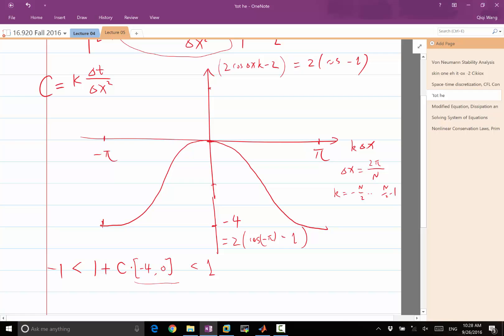Because when this takes the value of minus 4, my C has to be less than what?